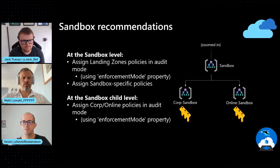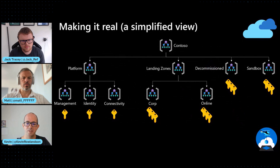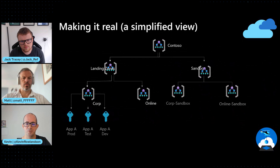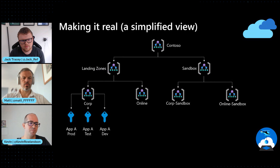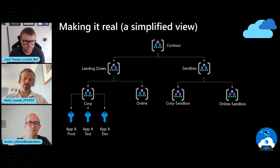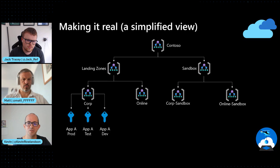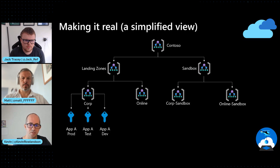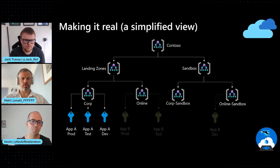Let's have a look at how that might look in practice in the context of the broader ALZ architecture. Here you can see the traditional ALZ hierarchy. We've got an example application called App A, which is the typical scenario for most customers where development, test, and prod all sit under the same governance model and can therefore all sit under the standard corp management group under landing zones.